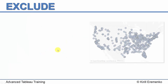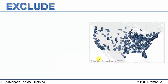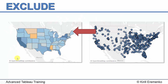Next we used exclude. We created a visualization at the city level and needed to get a value from a higher level of aggregation. We used exclude and excluded city, which brought us in the background to the level of granularity of state. From there we grabbed the profit for every single state and brought it back to our city level. We don't need sum or average here because we're bringing a measure from a higher aggregation level — that's where the ATTR function came into play.